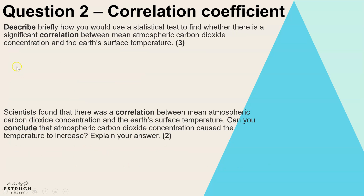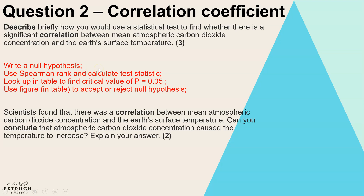Question two is the correlation coefficient. Describe briefly how to use a statistical test to find whether there is a significant correlation between mean atmospheric carbon dioxide concentration and the Earth's surface temperature. You would start by writing a null hypothesis, then state which statistic you would use — a correlation coefficient, or specifically Spearman's rank. You then calculate the test statistic and look it up in the critical values table for a p-value of 0.05 to work out whether you accept or reject the null hypothesis.